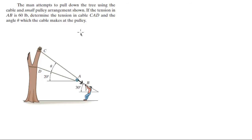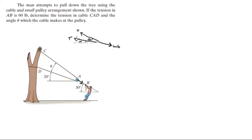We're going to draw the free body diagram. It shows two equal tensions — they're both the same because it's the same cable — plus the 60-pound force. This angle is 20 degrees, this angle is theta, and the whole combined angle is phi, where phi equals theta plus 20 degrees.